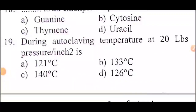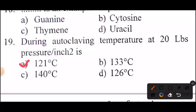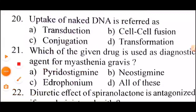Next question: During autoclaving, the temperature at 20 psi pressure per square inch is — Answer: Option A — 121 degrees Celsius.